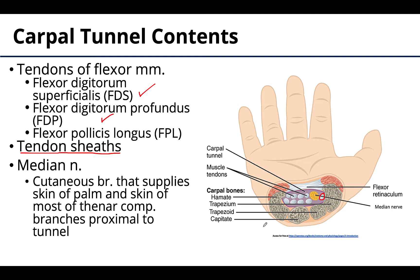Also traversing the tunnel is the median nerve. It just finished innervating most of the muscles in the anterior compartment of the forearm, but its work is not done — it needs to make its way to the hand to provide both sensory and motor innervation to particular parts of the hand. Of note, just before the carpal tunnel, there is a cutaneous branch called the palmar cutaneous branch, which branches just proximal to the carpal tunnel, and we will get to why that's important in a moment.